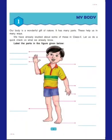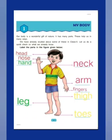Students, can you see the figure given below? Now, one by one, we are going to label the body parts. You can see I have already labeled the figure. The first one represents the head. The second one represents the nose. The third one represents the hand. At the bottom, it represents the leg.